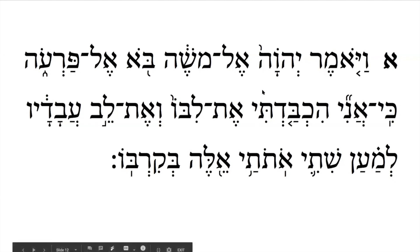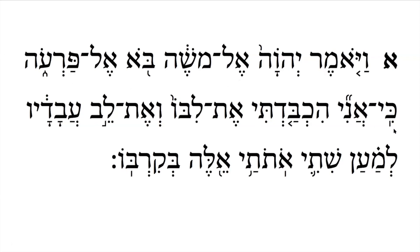Let's review the definitions. Vayomer — and he said. Adonai or Hashem — the sacred name. El — to. Moshe — Moses. Bo — come. El — to. Paro — Pharaoh. Ki — for. Ani — I. Hichbadti — have strengthened. Et libo — his heart. Ve-et lev — and the heart. Avadav — of his servants. Lema'an — so that. Shiti — I can place. Ototai — my signs. Ele — these. Bekirbo — in his midst.